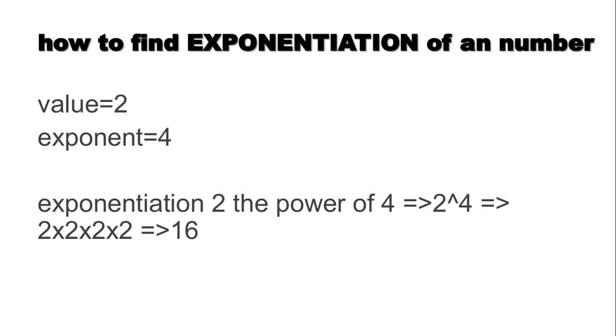Now guys, if we have two values, we can find the exponent 4. That is 2 to the power of 4 — 2 into 2 into 2 into 2. That is the exponent answer.